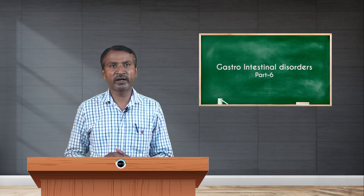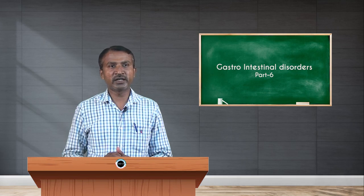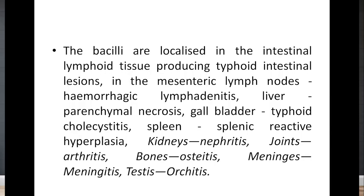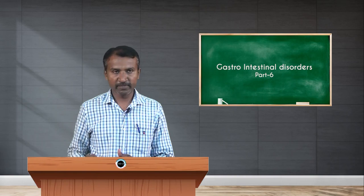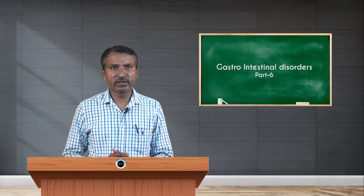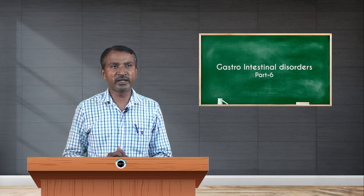The bacilli are localized in the intestinal lymphoid tissue, producing typhoid intestinal lesions, as well as in the mesenteric lymph nodes causing hemorrhagic lymphadenitis, liver causing parenchymal necrosis, gallbladder causing typhoid cholecystitis, spleen causing reactive hyperplasia, kidneys causing nephritis, joints causing arthritis, bones causing osteitis, meninges causing meningitis, and testis causing orchitis. Morphological features — the lesions are observed in the intestines as well as in other organs of the body.